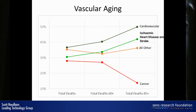I've grouped ischemic heart disease and stroke together because they are both predominantly and almost completely associated with vascular aging, and that led to our decision to focus on vascular aging as an area of investment. On top of those, there are other diseases like dementia and blood barrier and filter diseases that also have a heavy vascular aging component. I haven't included them in our vascular category because I'm not yet confident enough in my research, but certainly vascular aging by itself would be a much larger category.